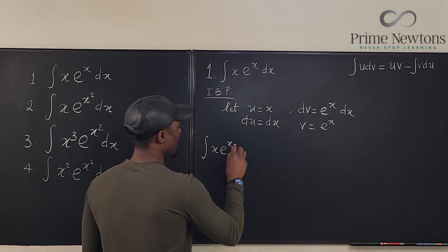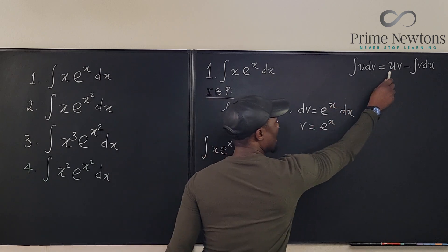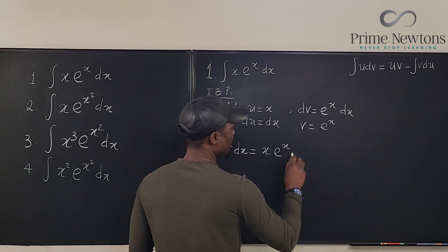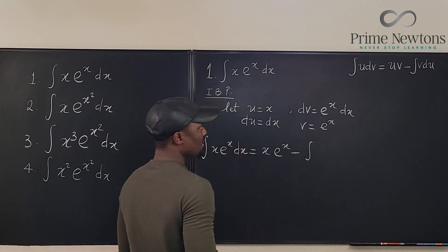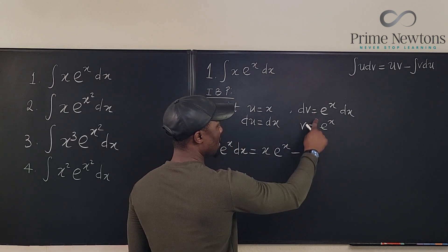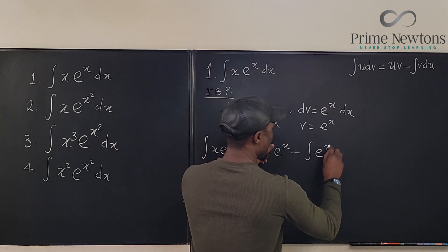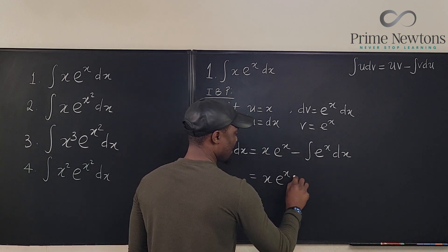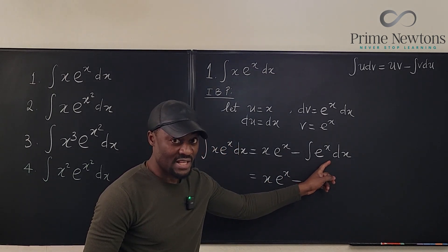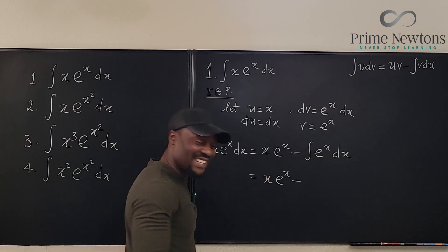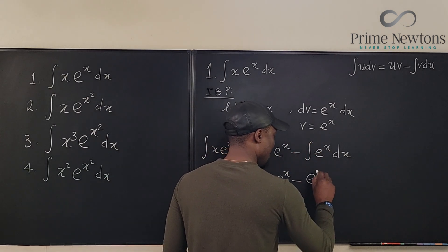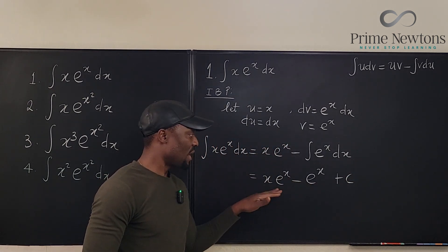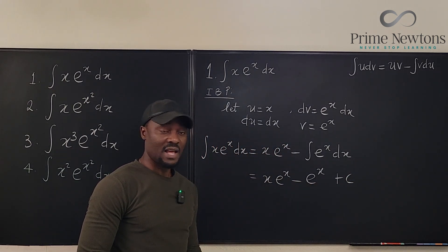So the integral of x·eˣ dx equals u·v minus the integral of v du, which is x·eˣ minus the integral of eˣ dx. The integral of eˣ is just eˣ, so the final answer is x·eˣ minus eˣ plus C. That's why I said choose eˣ to integrate — and we're done with problem one.